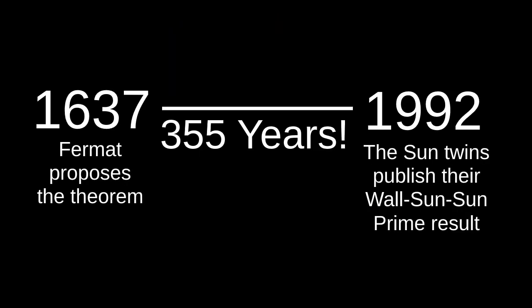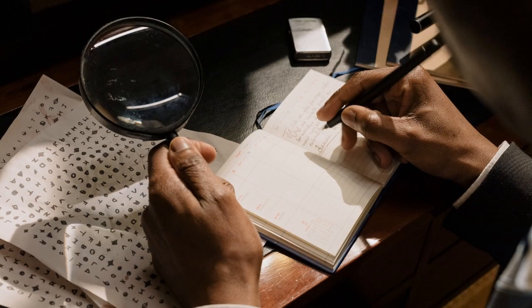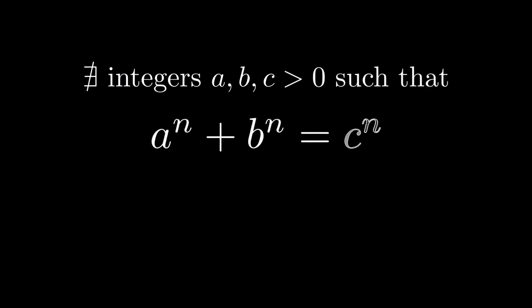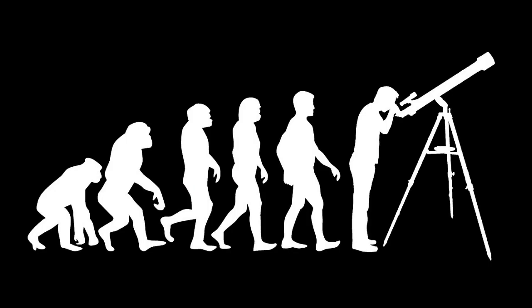This was absolutely huge. Fermat's Last Theorem had sat around unproven since 1637, and was considered one of the great unsolved mathematical mysteries. The theorem states that there are no three positive integers a, b, and c such that a to the n plus b to the n equals c to the n, for any whole number n greater than 2.